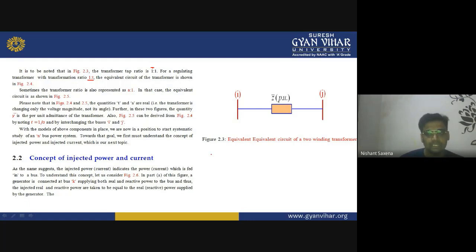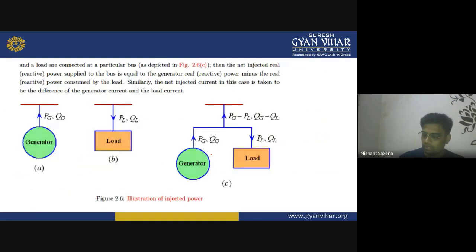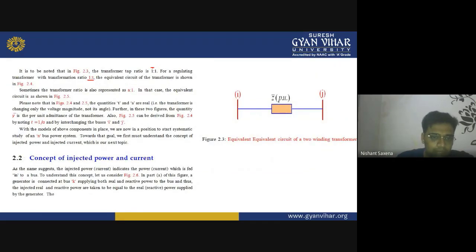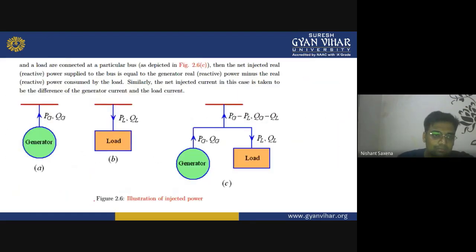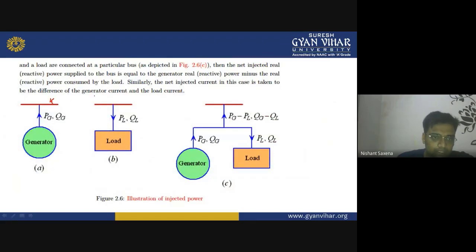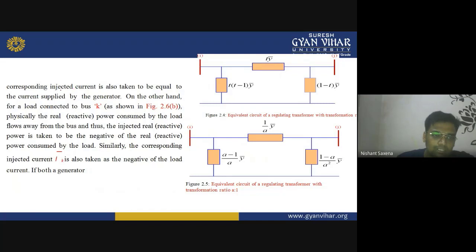The injected power or current indicates the power and current fed into a bus. To understand this concept, consider figure 2.6. In part (a) of this figure, a generator is connected to a bus — it is injecting real and reactive power generated by the generator into bus k, supplying both real and reactive power to the bus. Thus the injected real and reactive power are taken to be positive, equal to the real and reactive power supplied by the generator. The corresponding injected current equals the current supplied by the generator.